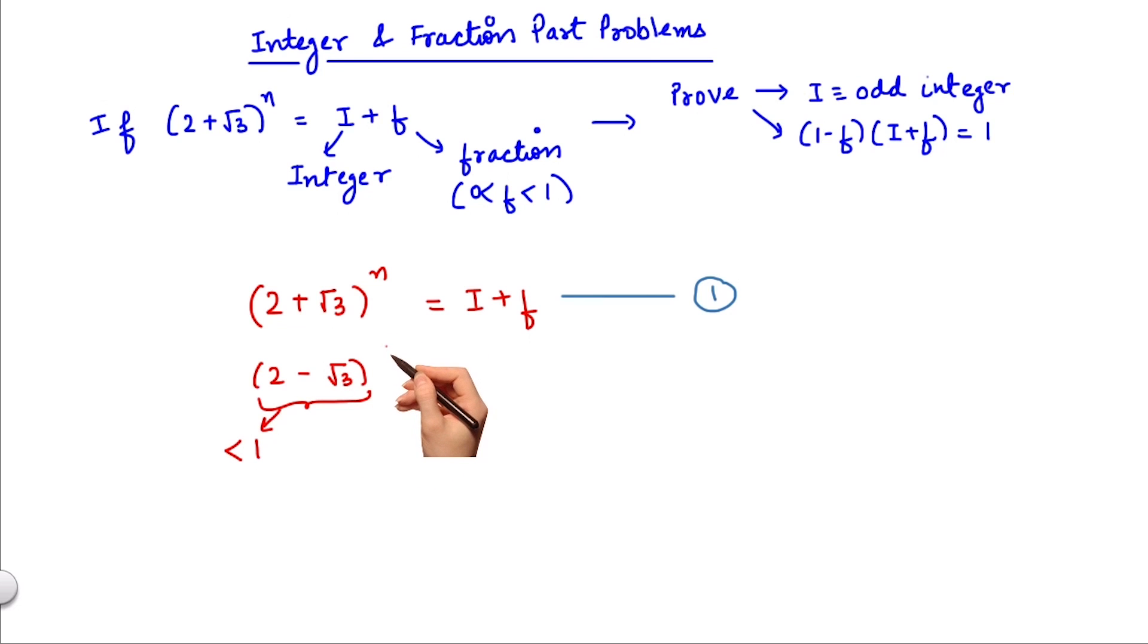So let me write 2 minus root 3 to the power n equals to f dash. Now since 2 minus root 3 is less than 1, so f dash will also lie between 0 and 1.